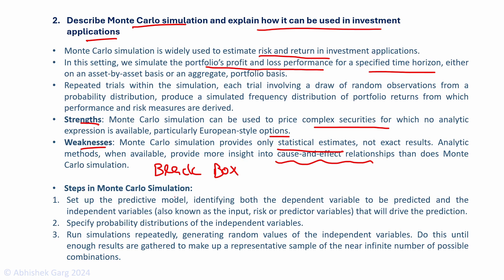The steps in a Monte Carlo simulation are: first, set up a predictive model identifying both the dependent variable and the independent input variables. Then specify the probability distribution of the independent variables. Then run repeated simulations generating random values of the independent variables, doing this enough times so that sufficient data is gathered to make up a representative sample of the infinite number of possible combinations.